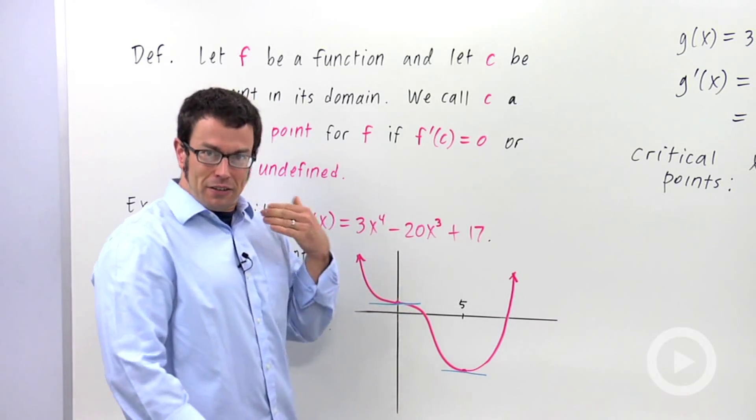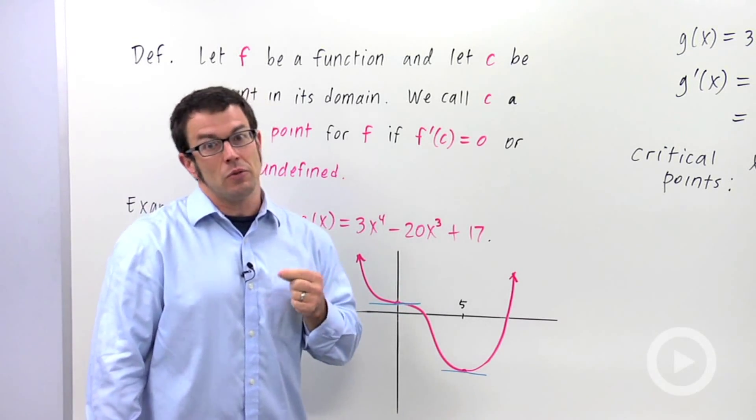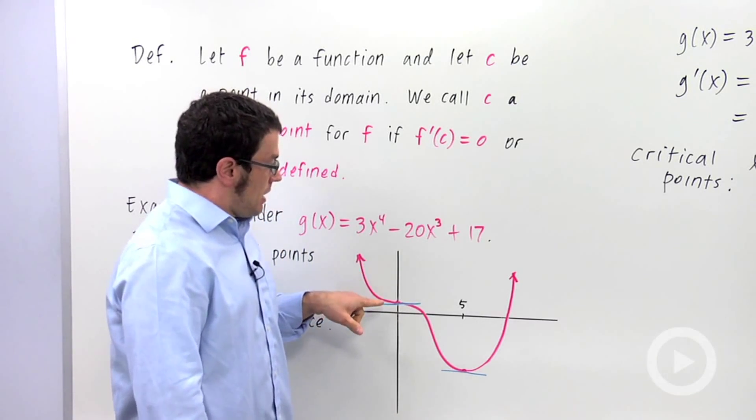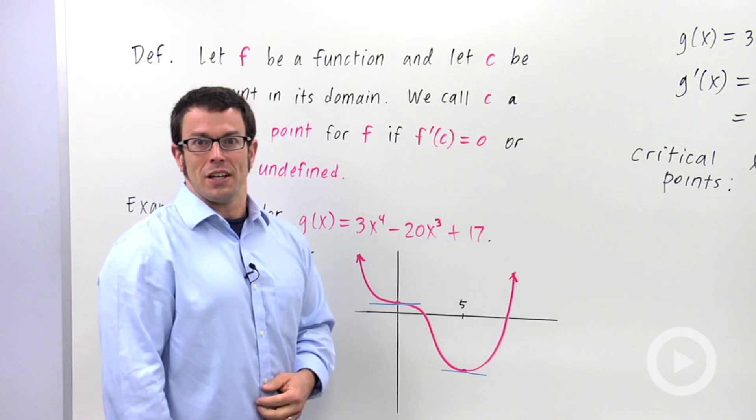So once again, the critical point is a point where the derivative equals 0 or is undefined. And its significance, at least in this example, is that these are the points where the tangent is horizontal.